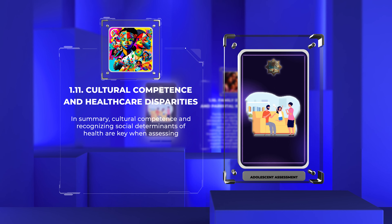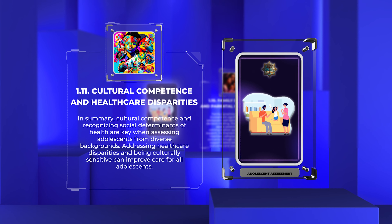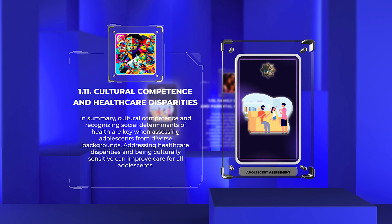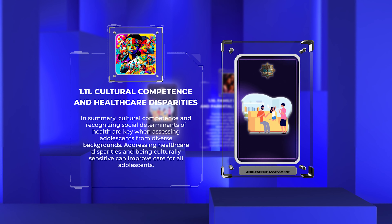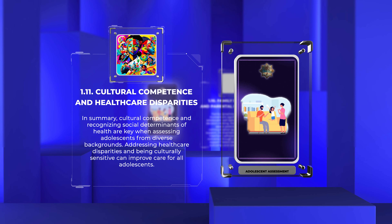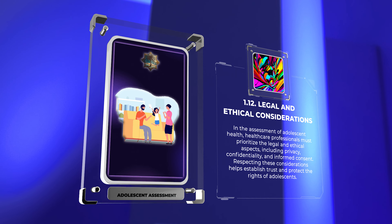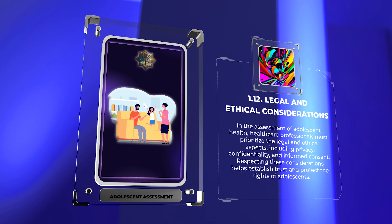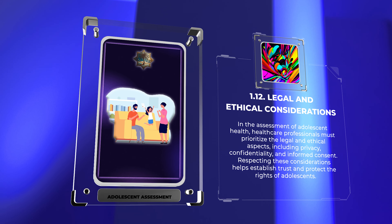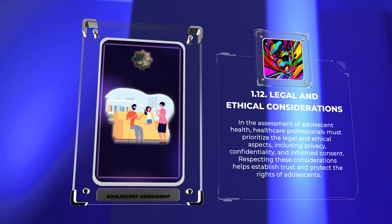Cultural competence and recognizing social determinants of health are key when assessing adolescents from diverse backgrounds. Addressing healthcare disparities and being culturally sensitive can improve care for all adolescents. In the assessment of adolescent health, healthcare professionals must also prioritize legal and ethical aspects, including privacy, confidentiality, and informed consent. Respecting these considerations helps establish trust and protect the rights of adolescents.